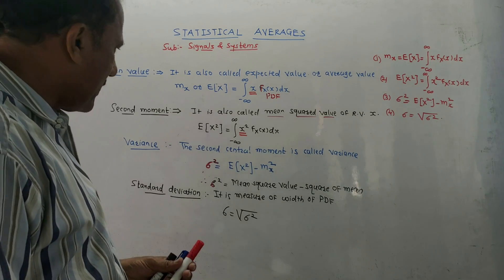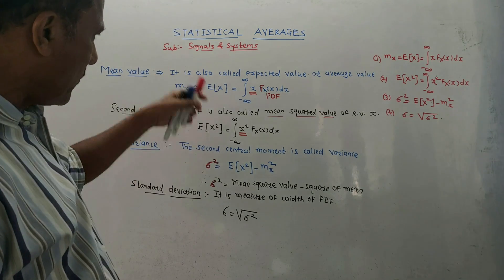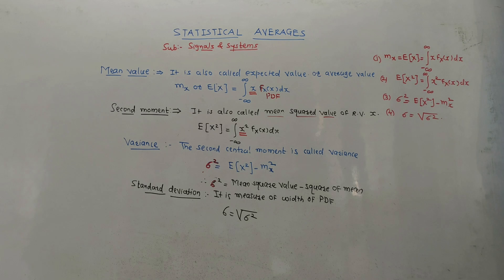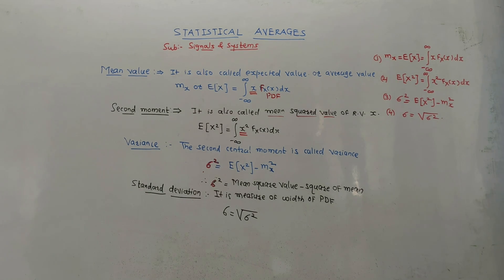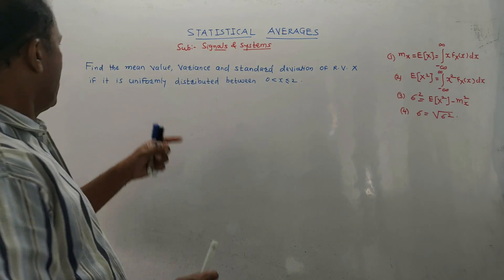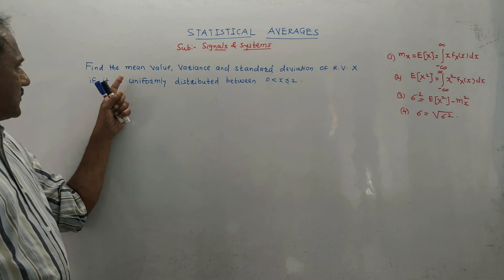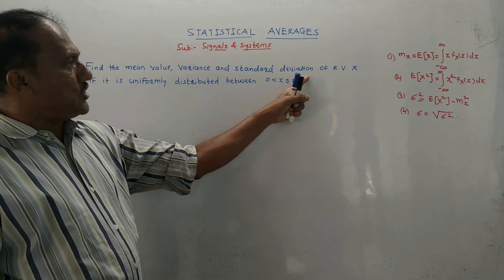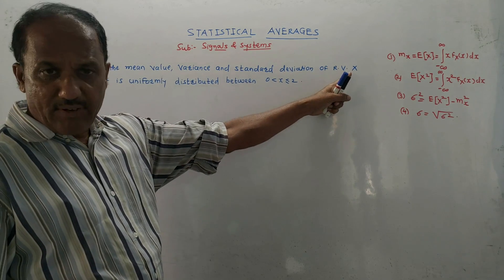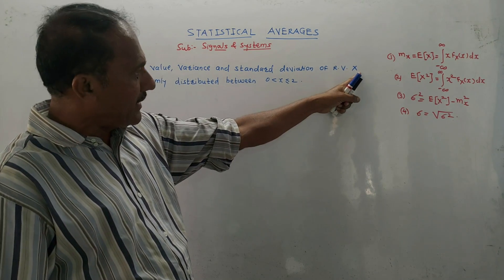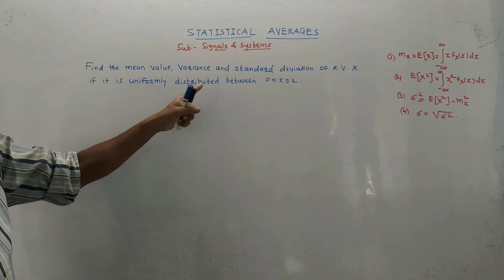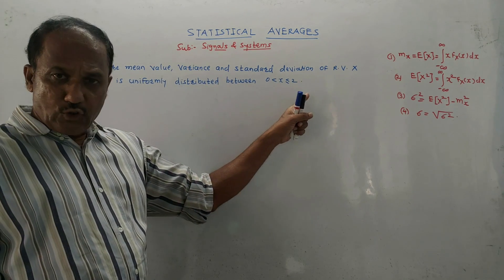For quick understanding of these numericals, I have made a list of formulae. Let us solve a few numericals related to this. Consider the numerical: find the mean value, variance, and standard deviation of random variable X if it is uniformly distributed between the range 0 to 2.